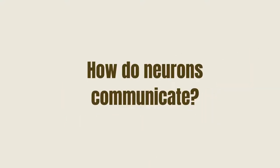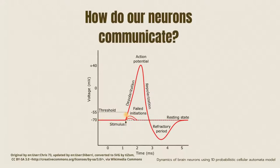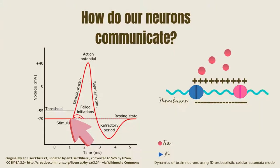We can look at how these neurons communicate. Research shows that by calculating the voltage of the membrane over time, we can know if there's a signal that's being transmitted from one neuron to another.